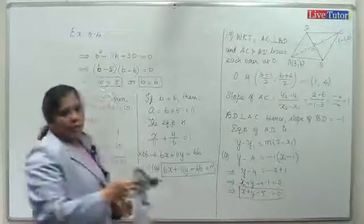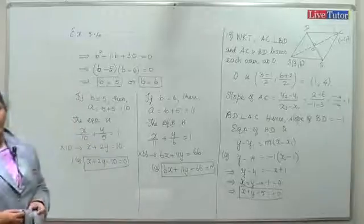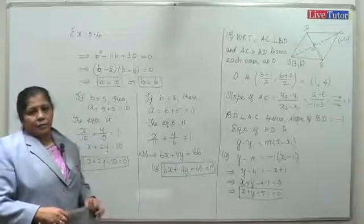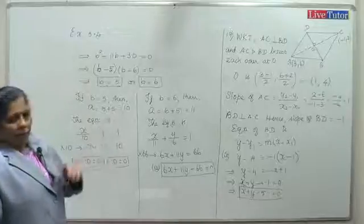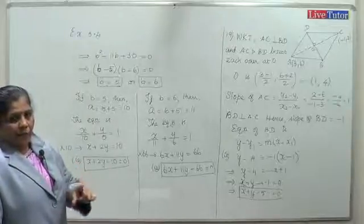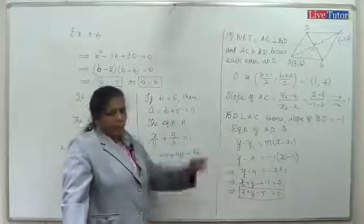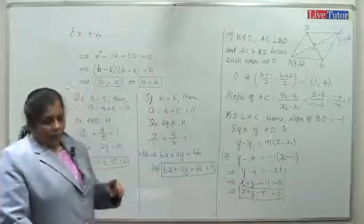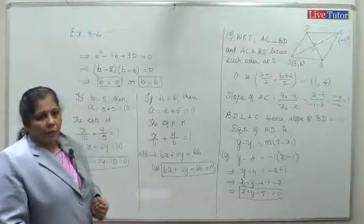The diagonal of a rhombus bisects the other at right angles. I will also explain this concept further when dealing with the 19th question.